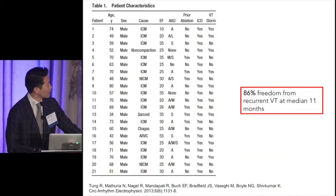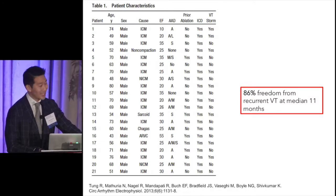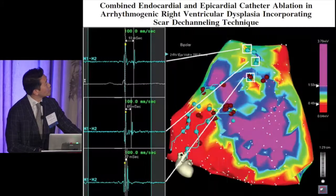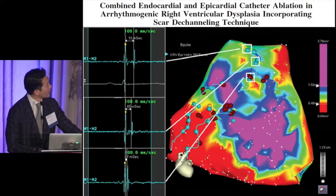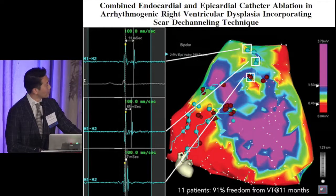In this cohort, it was our best series in terms of freedom from VT at UCLA — 86% with a mixture of ischemic and non-ischemic patients did not have recurrence of VT at one year. Similarly, de-channeling in Spain by Berruezo et al. demonstrated 91% freedom from VT, which may be the best in the whole field for ARVC — truly unbelievable freedom from VT.